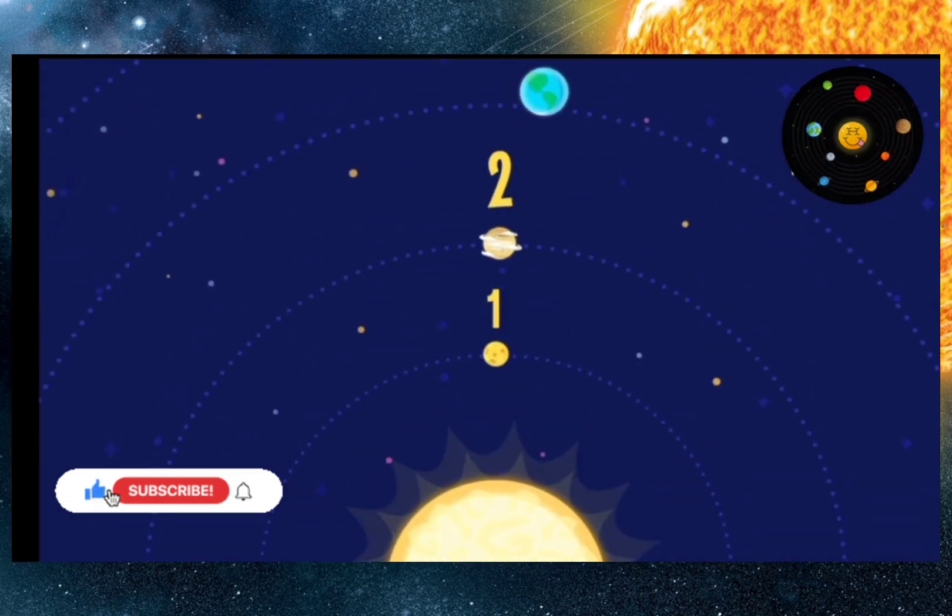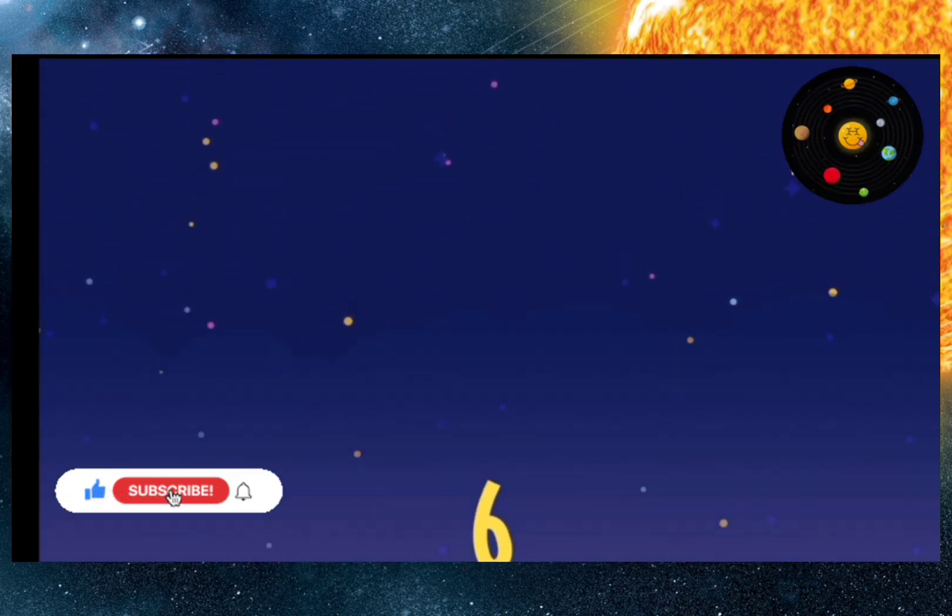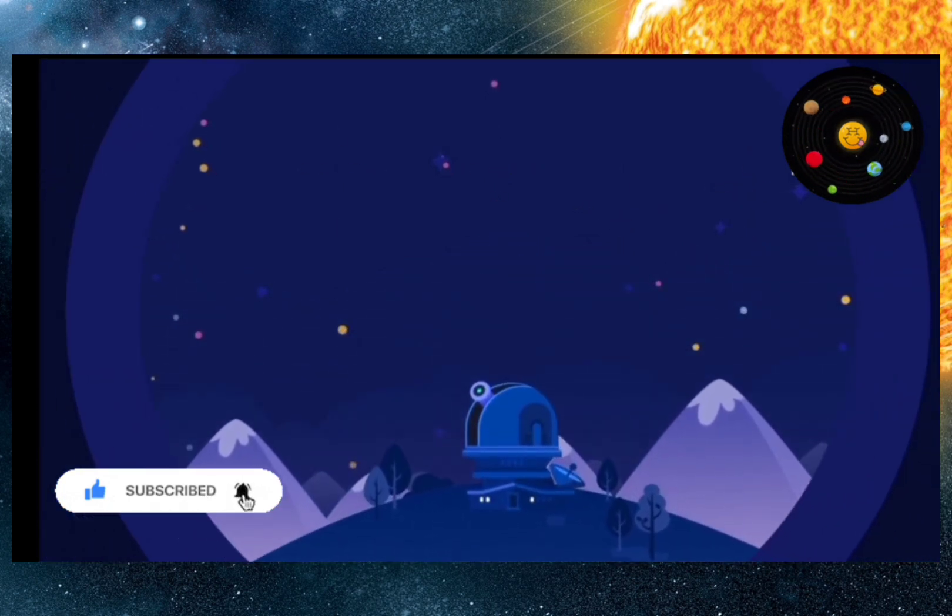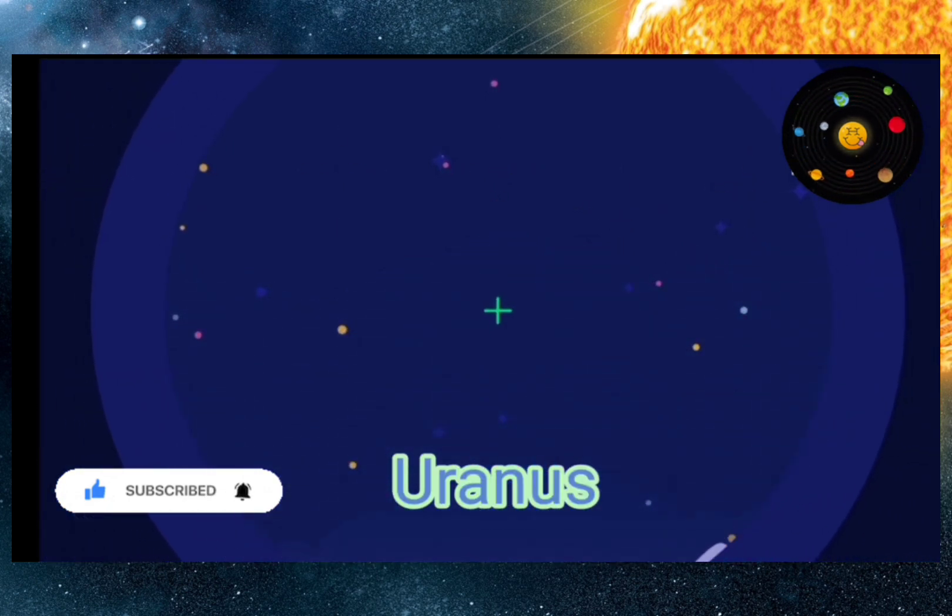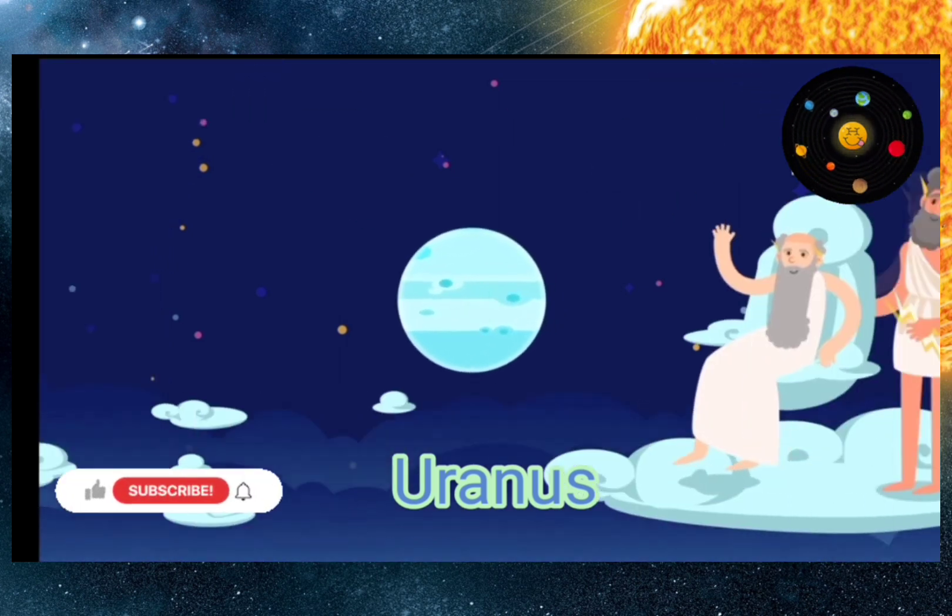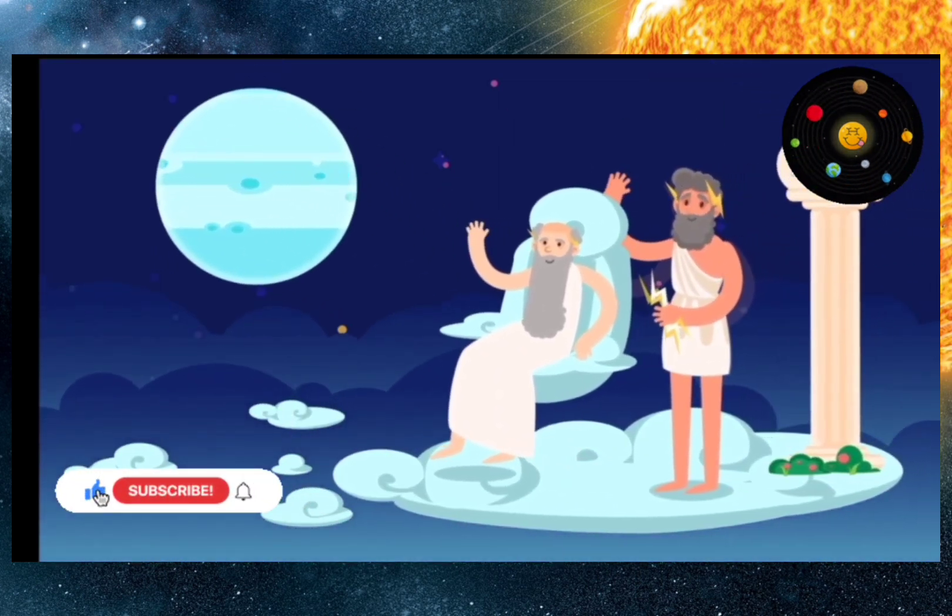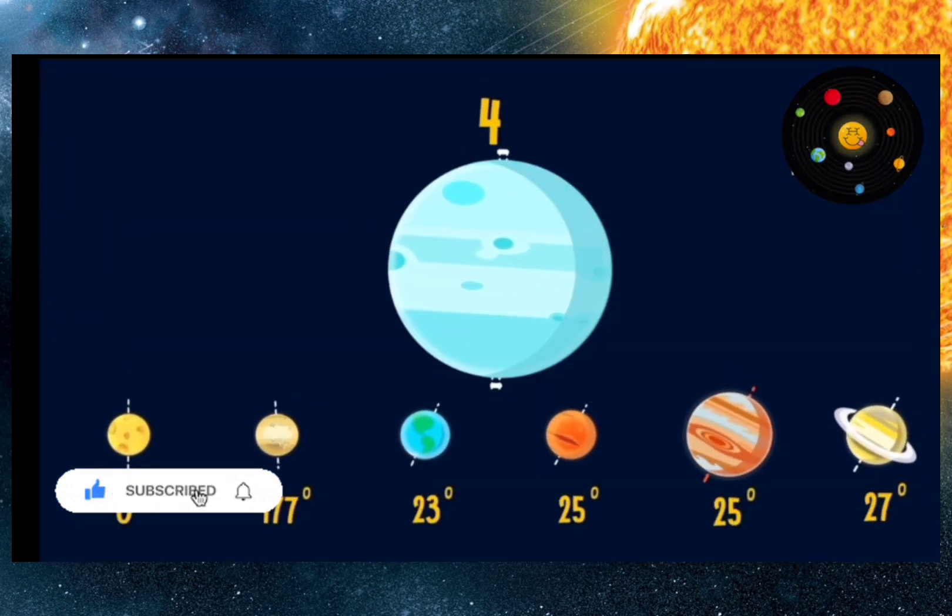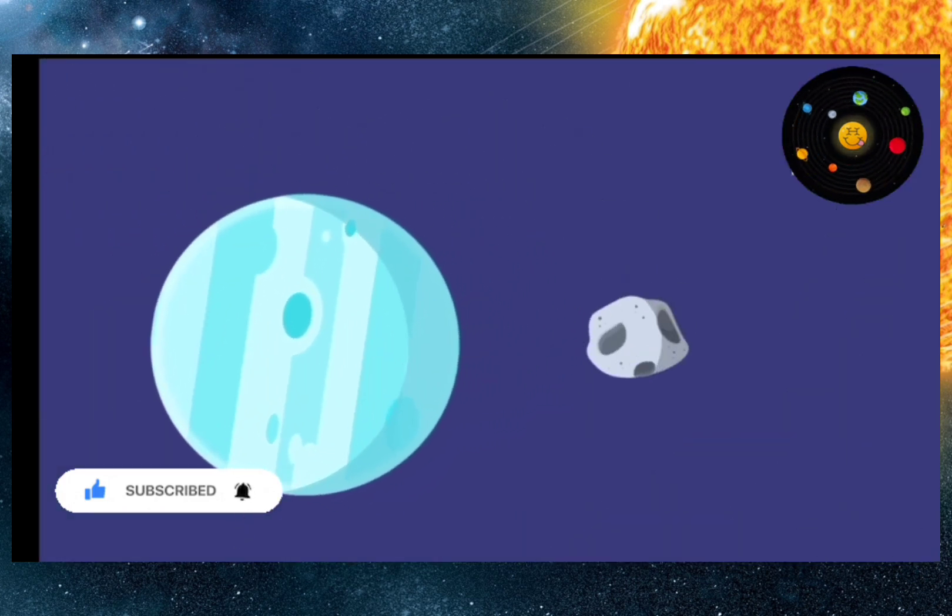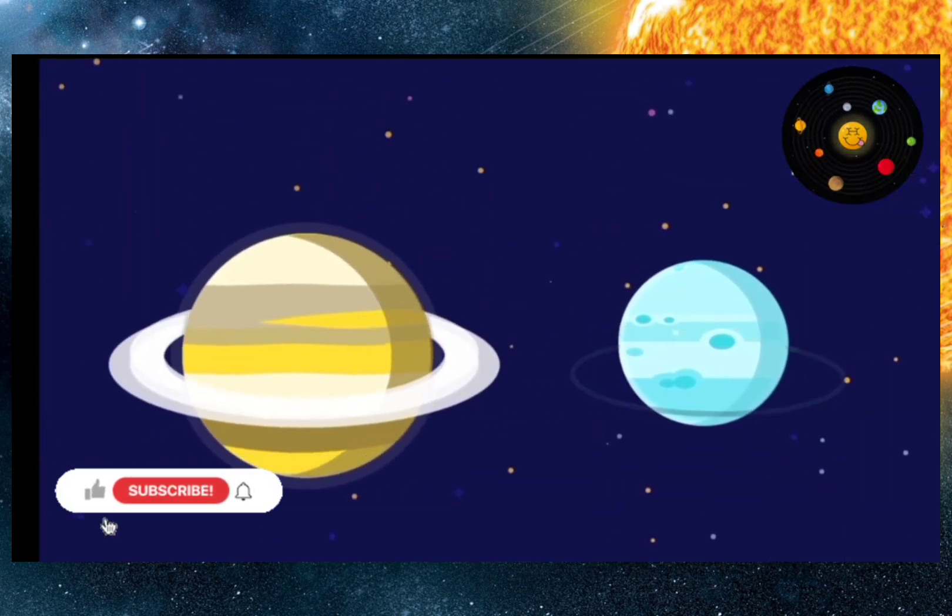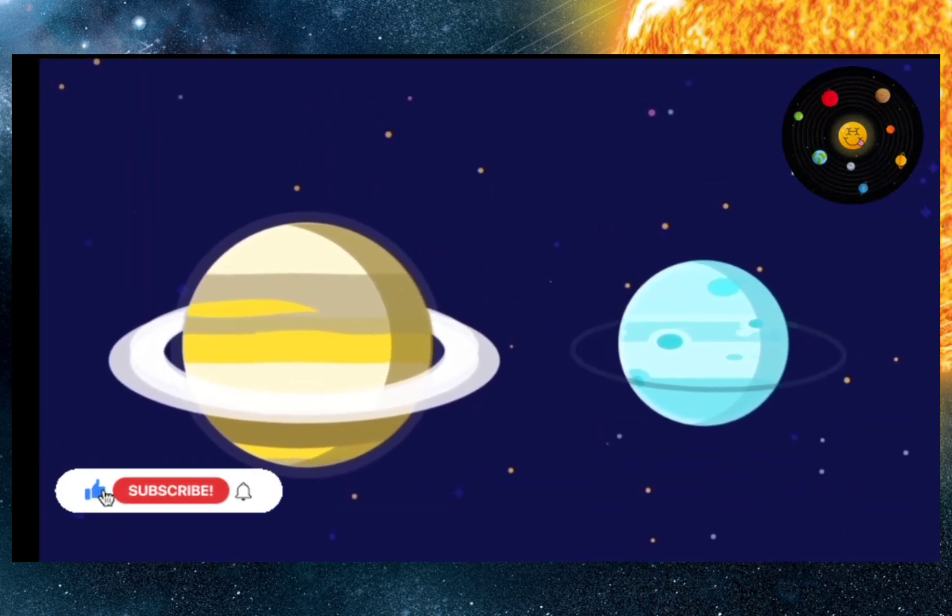For a long time, people thought there were only six planets, because they are easy to see in the night sky. Uranus, the seventh planet from the sun, was discovered much later with a telescope, and named after the Greek god of the sky, Zeus's grandfather. Unlike other planets, Uranus rotates on its side. Presumably, it got this tilt from a collision with a large body, the size of Earth. Like Saturn, it has rings, but they are dark and do not reflect light.